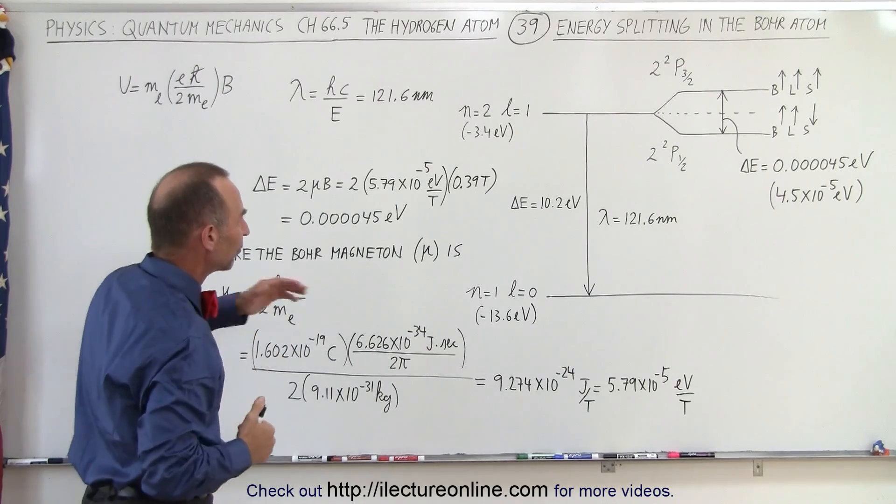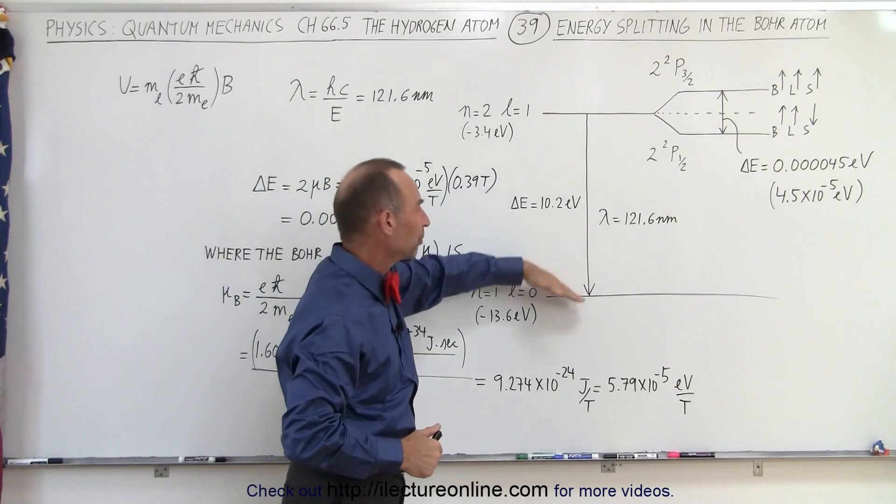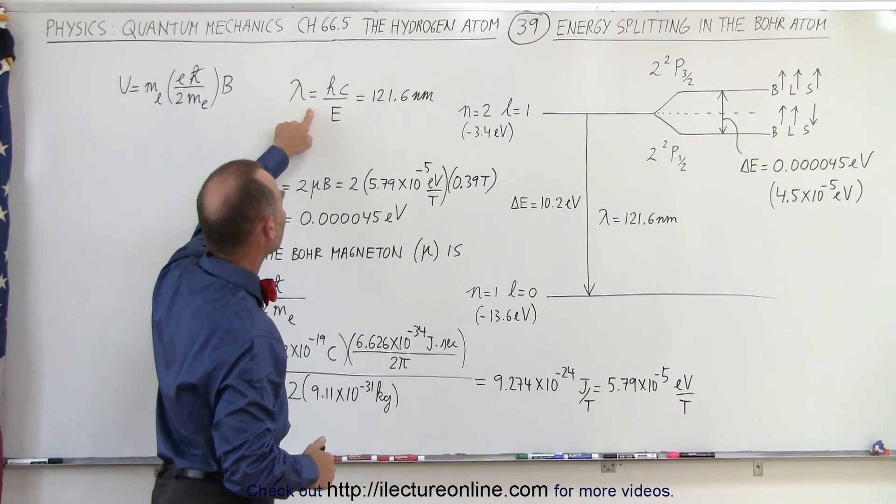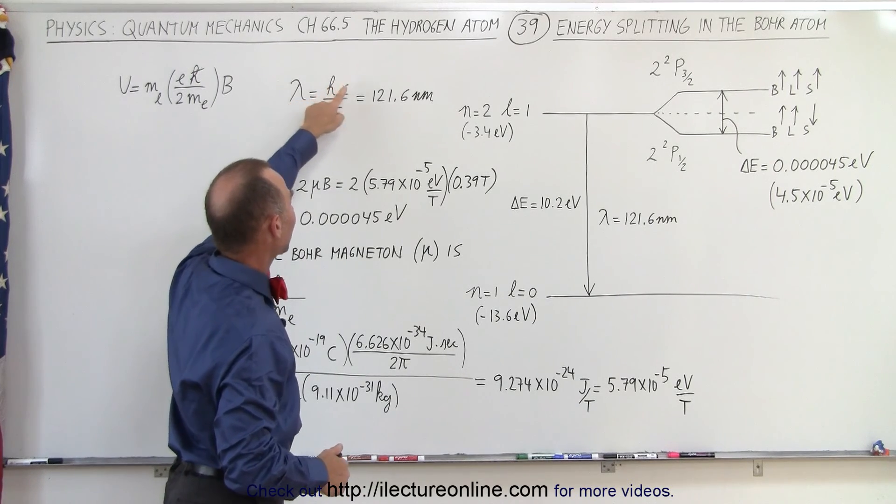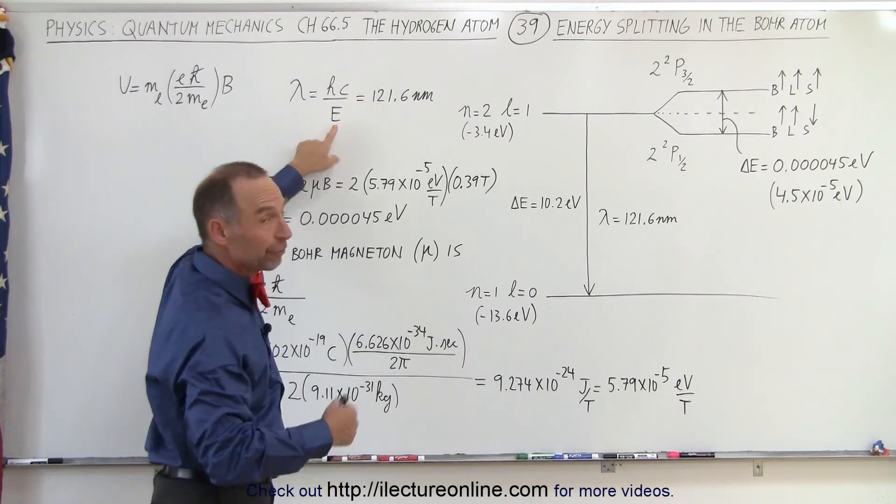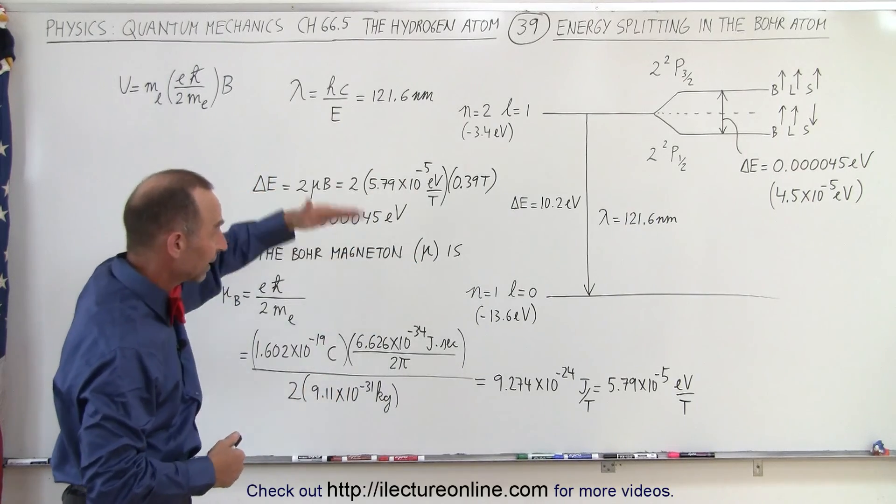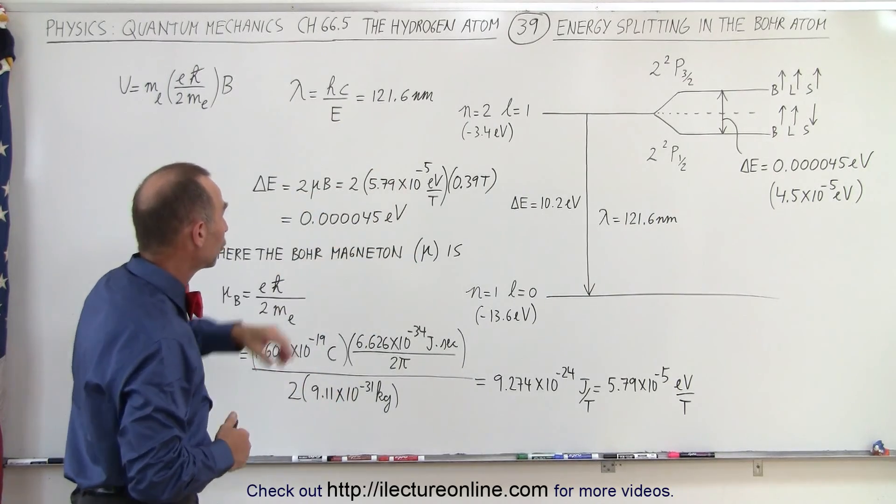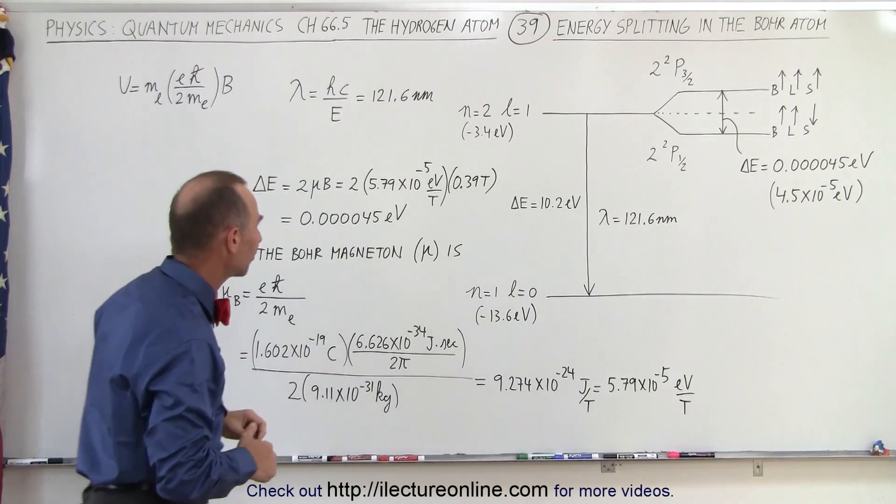So if we calculate, first of all, the wavelength produced by the two jumps, that can be done by multiplying Planck's constant times the speed of light divided by the energy converted to joules, of course. So we take 10.2 electron volts, convert to joules, and we end up with 121.6 nanometers.